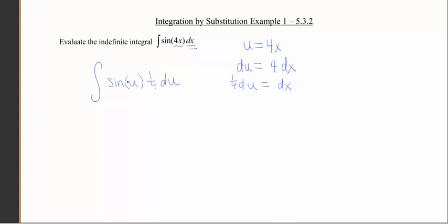Now having this 1 fourth in between the sine function and the du is a little bit awkward. So hopefully you guys remember that you can just pull those constants right outside of the integral. So we now have 1 fourth the integral of sine u du.